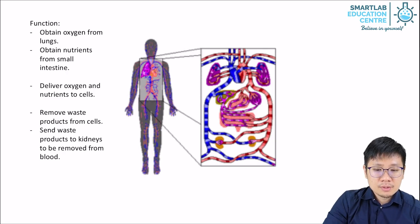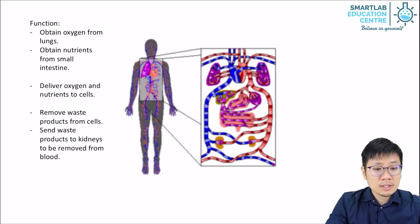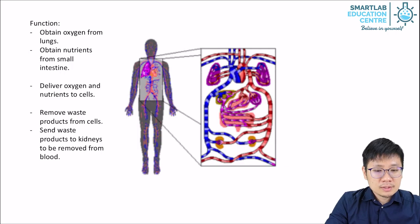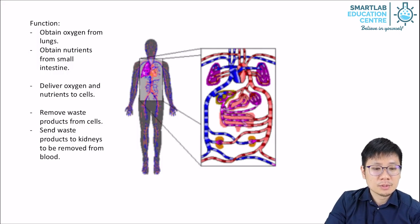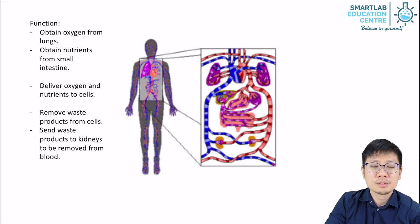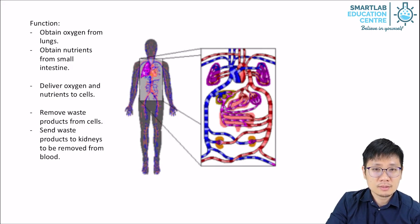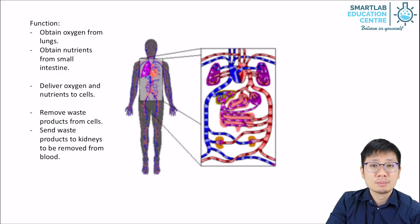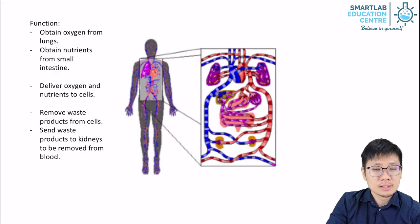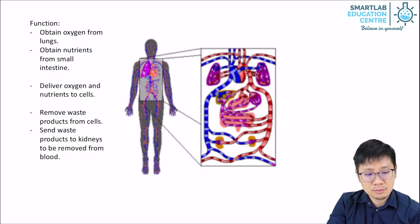Let's quickly run through the general functions. For humans, we use our heart and blood vessels to obtain oxygen from the lungs and to obtain nutrients from the small intestine. Once the blood has absorbed these things, it can distribute the oxygen and nutrients all around the body. It also helps remove waste materials from our cells. Every cell produces a bit of waste material — for example, carbon dioxide. The blood will absorb that carbon dioxide and bring it to the lungs to be removed.